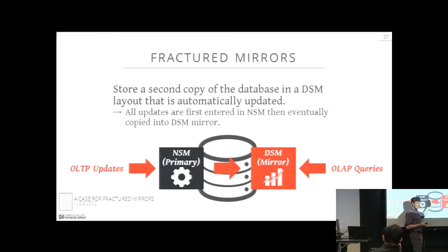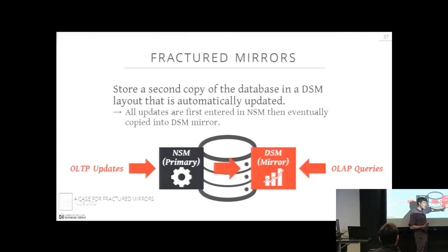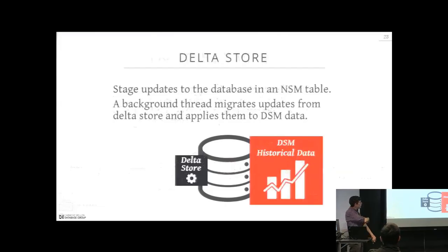In Oracle's implementation, the DSM mirror is completely in-memory and non-durable. If the database crashes, the DSM mirror is lost, but when the system restarts it rebuilds over time from the NSM data. As an application developer, you don't know the mirror exists — you write queries to the regular database system and the optimizer decides which of the two copies to execute against. Oracle's motivation: their large customer base relies on the NSM side, so this lets them add column store benefits without forcing major changes.